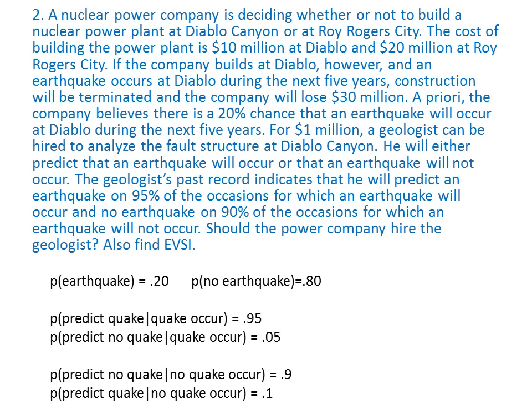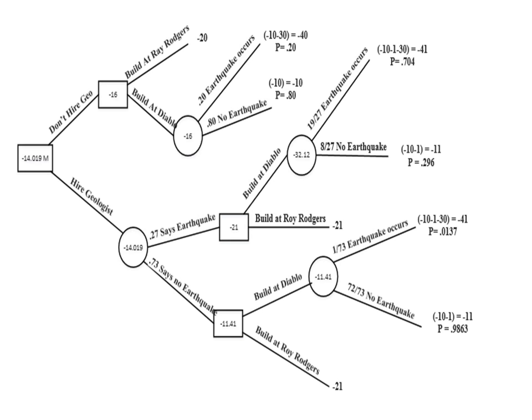Next, let's put together the structure of the decision tree. The first decision is: should the company hire the geologist or not? If they hire the geologist, the geologist will predict either earthquake or no earthquake. If the prediction is earthquake, the company decides to build at Diablo or Roger City — and if they build at Diablo, an earthquake will either happen or not. If the prediction is no earthquake, again the company decides between Diablo and Roger City. If they don't hire the geologist, they still decide between Roger City and Diablo.